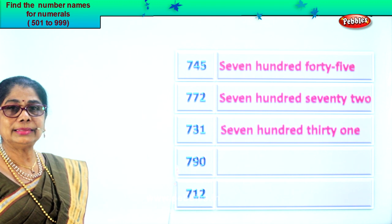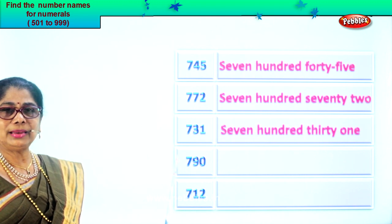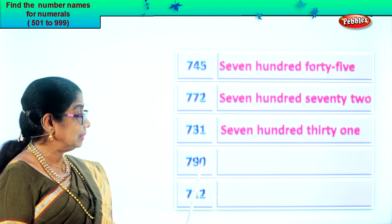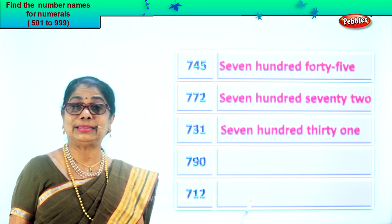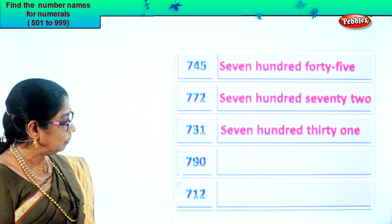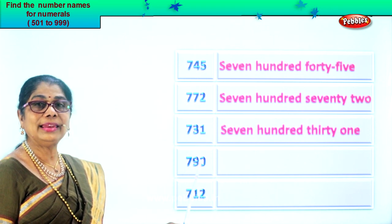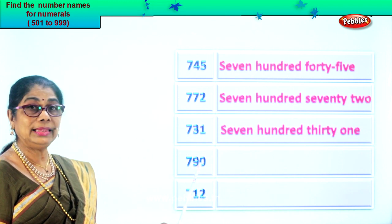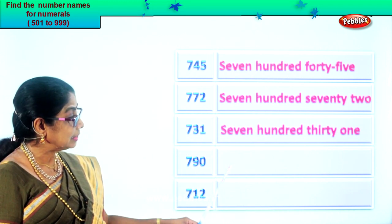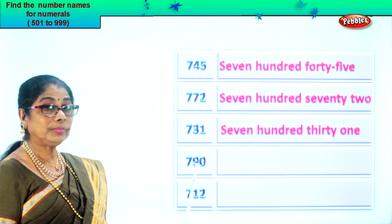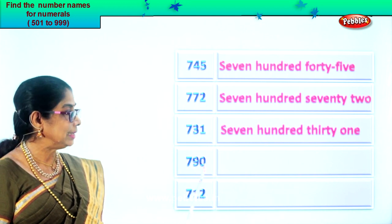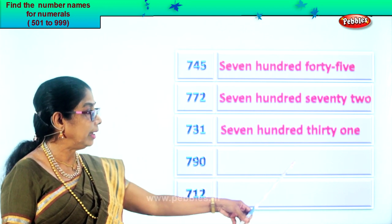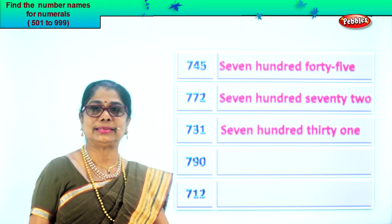Let's take this numeral: seven, nine, zero. Seven in the hundreds place, nine in the tens and zero in the ones place. Let's read the numeral: seven hundred ninety. So first we write seven hundred, then we write ninety. Seven hundred ninety. Good.